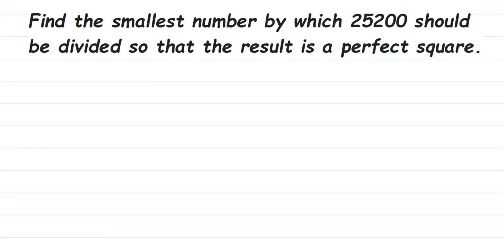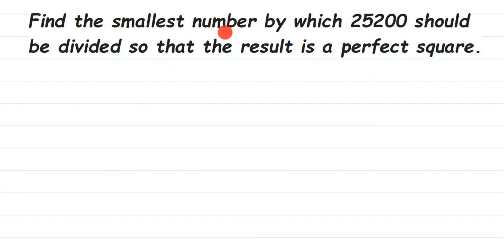Here's a question from squares and square roots: find the smallest number by which 25200 should be divided so that the result is a perfect square. This number is not a perfect square — we have to make it a perfect square by dividing with the smallest number.